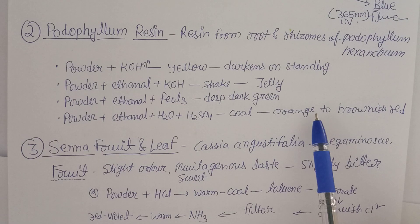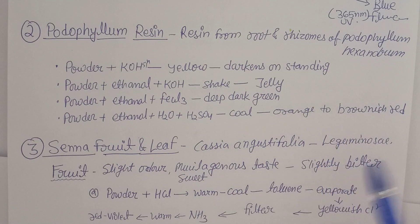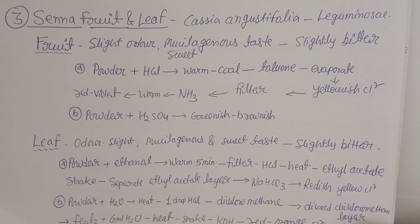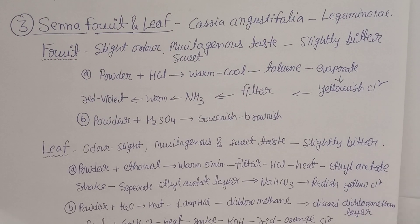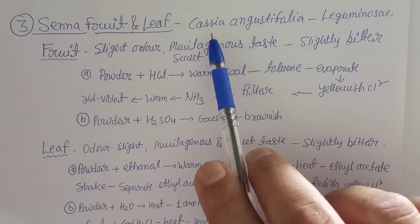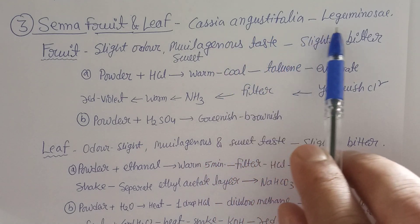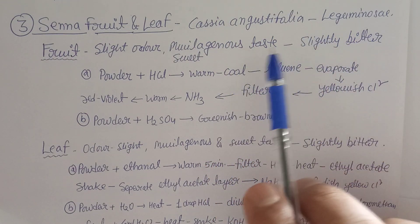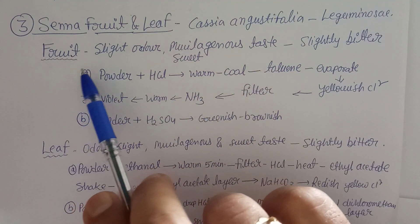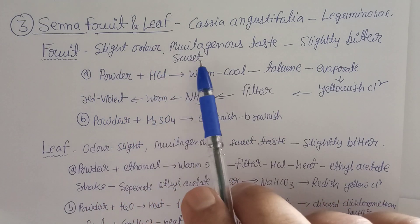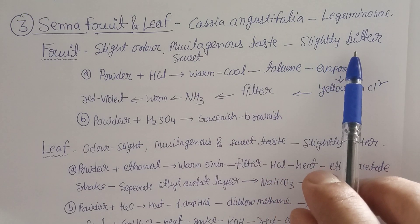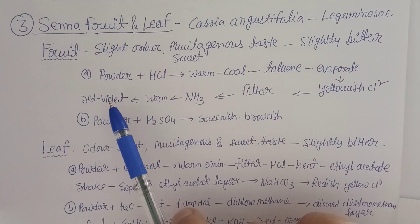These tests confirm the presence of Podophylloresin in the given sample. The third drug is Senna leaf or Senna fruit, both used as crude drugs. The botanical name is Cassia angustifolia, belonging to the family Leguminosae. You can write down the botanical name as it is a main identity marker. Senna fruit has a slight odor, mucilaginous and sweet taste, with a slight bitterness also observable.